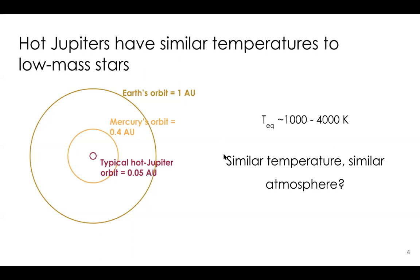As a first idea, we might think that because hot Jupiters have similar temperatures to low-mass stars, maybe they have similar atmospheres and similar molecules — including metal hydrides and metal oxides.